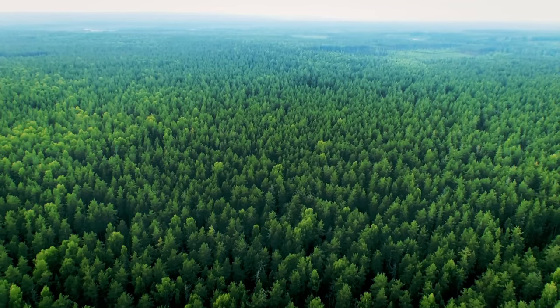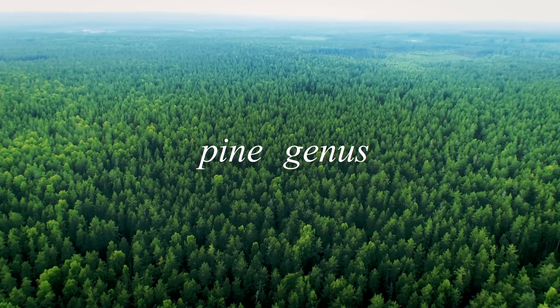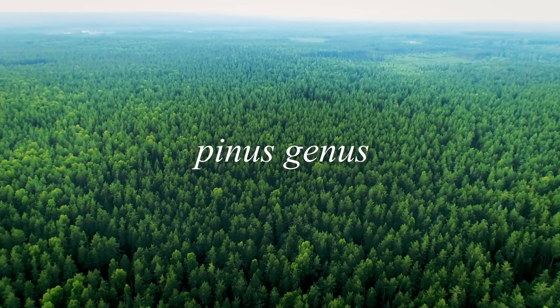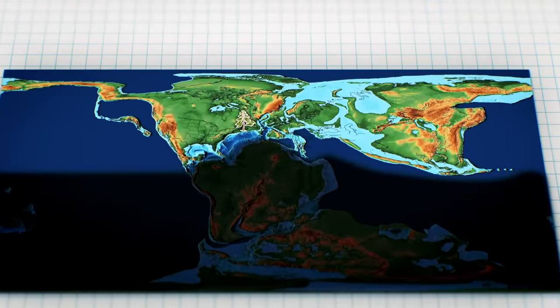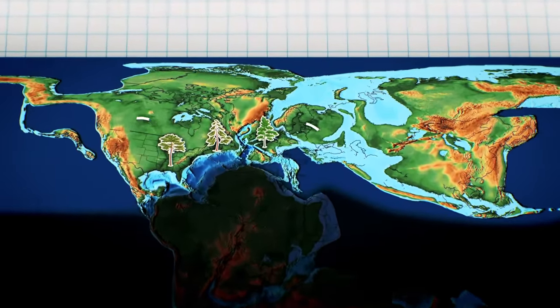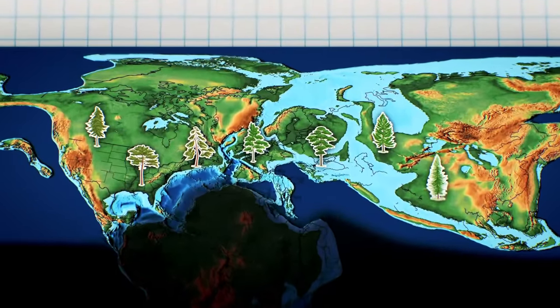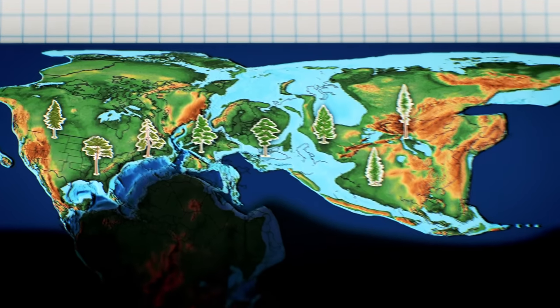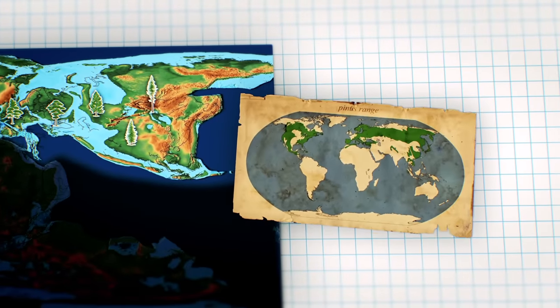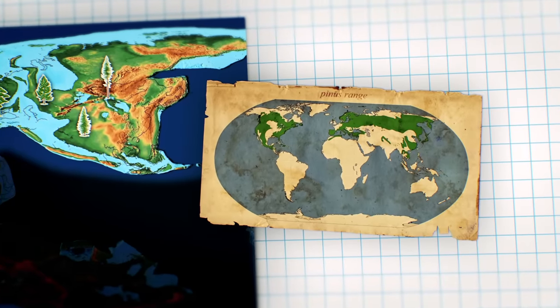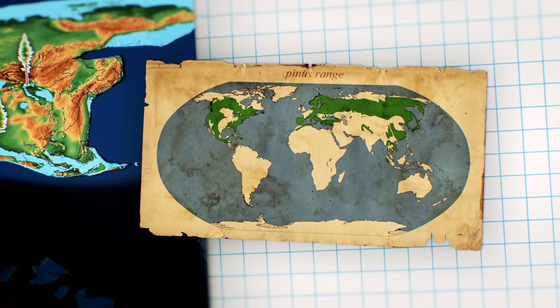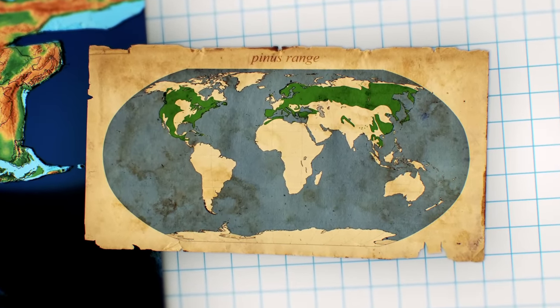A good example of how this pressure manifested itself would be in the Pine Genus, or as the fancy scientists would call the Pinus Genus. Having evolved on Laurasia some 130 million years ago, pine trees quickly distributed themselves across the continent, which is why, even if we look at a modern distribution map for pine trees, we'll see they still exhibit a Laurasian distribution, only growing in lands that once belonged to the Arctic realm.